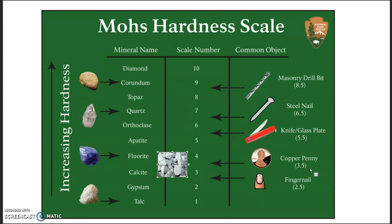A fingernail is 2.5 on Mohs scale, and sandstone is around six — yet you can scratch sandstone with your fingernail, you can leave a mark on it. So whether you can affect another material has nothing to do with Mohs hardness scale. Stone — whether limestone or sandstone — is sedimentary rock: little bits and pieces cemented together. Mohs hardness scale operates at the small scale of how one tiny piece scratches another. It has nothing to do with cutting.